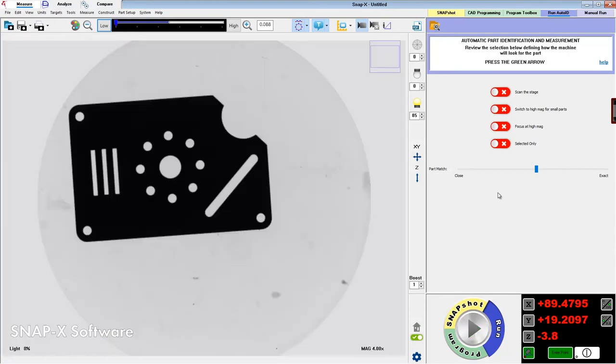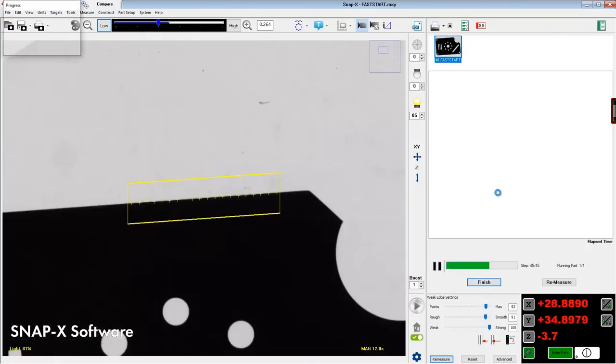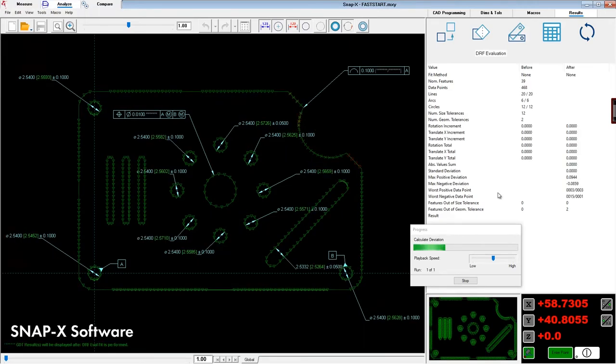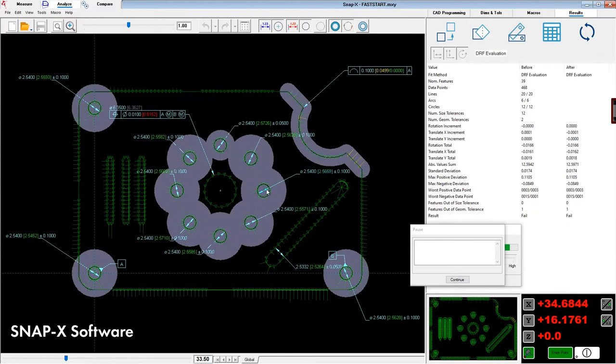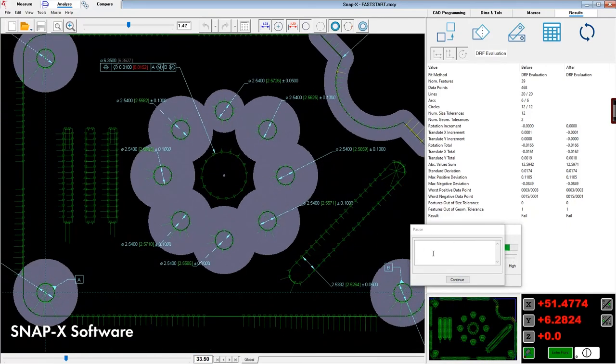For simple checks, live video images can be compared directly with a CAD overlay as with an optical comparator, but with much greater resolution. For further interrogation after measurement, SNAP X gives the user the ability to analyze basic GD&T requirements such as profile or true position.